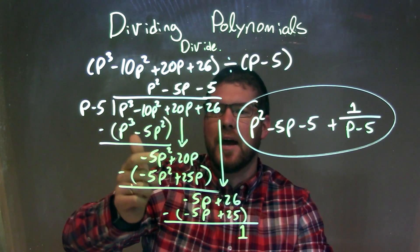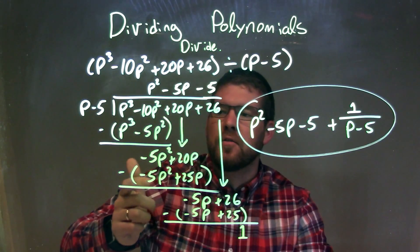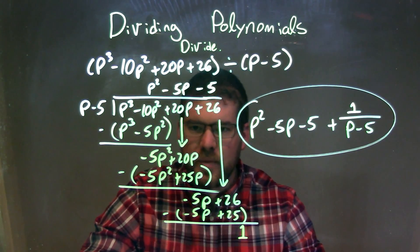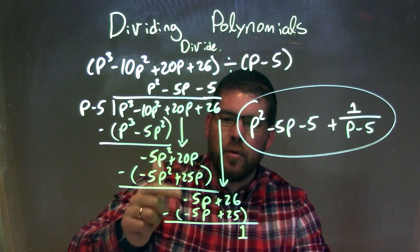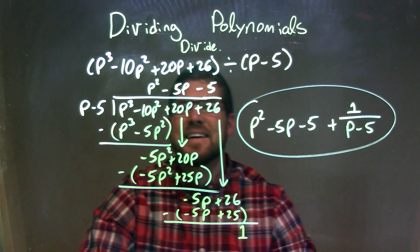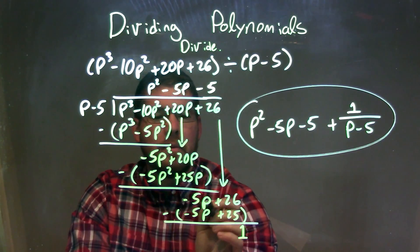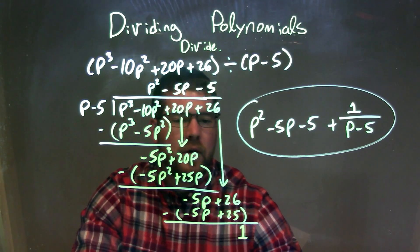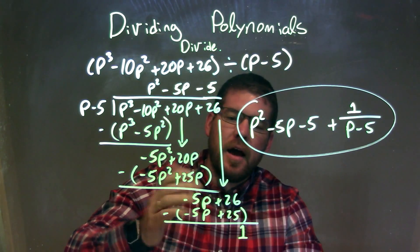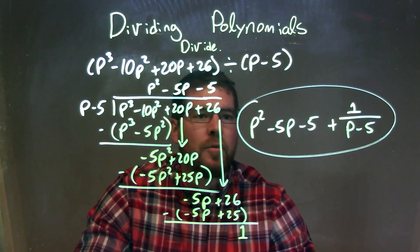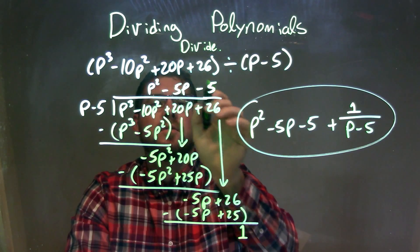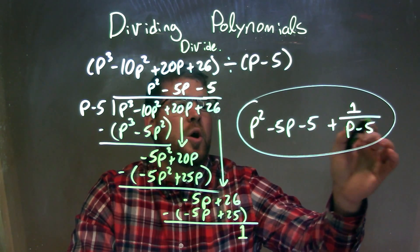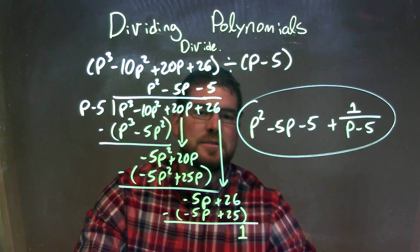Same thing: what times p gave me minus 5p squared? That's minus 5p. I multiplied minus 5p to both parts, got minus 5p squared plus 25p. Subtracted them, ended up with minus 5p. Brought down the 26. Same thing again: what times p gave me minus 5p? That's minus 5. Minus 5 times p was minus 5p, and minus 5 times minus 5 is positive 25. I subtracted the two, got a remainder of positive 1. So my final answer is p squared minus 5p minus 5, plus my remainder of 1 over my divisor p minus 5.